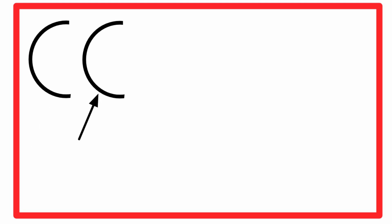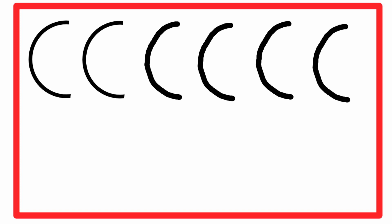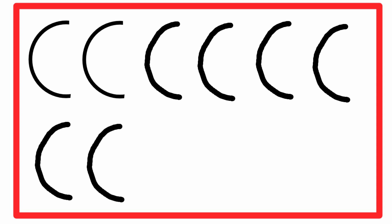Then look at the next one. There are 1, 2 forward curves. Now we are going to draw the 3rd curve, 4th curve, 5th curve, 6th curve, 7th curve, 8th curve and the 9th curve. So we got 9 forward curves.